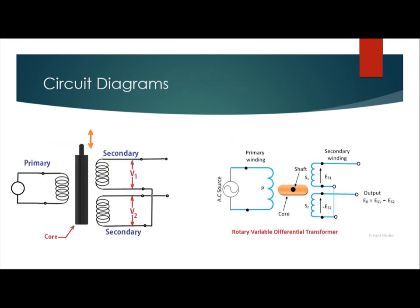In the circuit diagram of RVDT, there is a shaft inside the core. The shaft is moving between the primary winding and the secondary winding. If the RVDT is used — as we know, it is used to measure angular movement — the shaft inside the core is rotated, as shown in the diagram. This is how RVDT works.